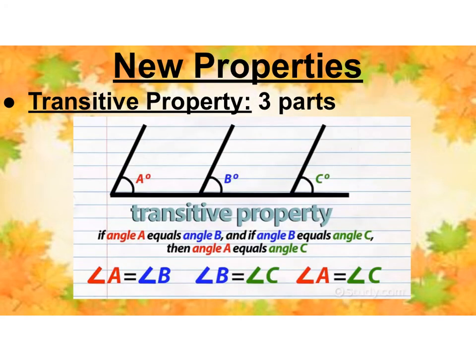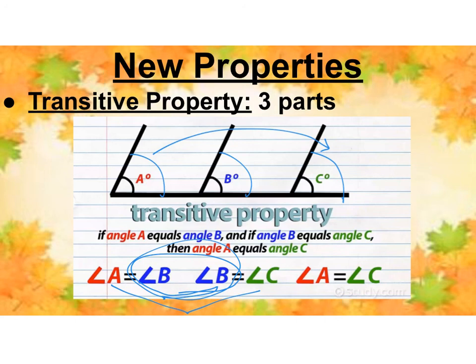And the transitive property uses three parts. So here I have angle A, B, and C. This says if A is equal to B and B is equal to C, then A must be equal to C. So we've got this repeated middle part where they both equal B. So if they both equal B, then I can just set each of them equal to each other. We are going to be using this quite often and there are three parts involved. As long as that middle piece is the same, you can pull it out and then make the conclusion that A equals C.